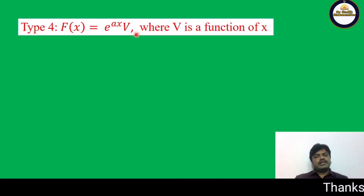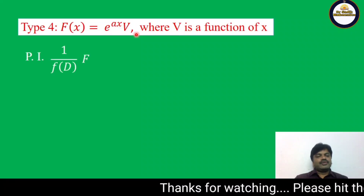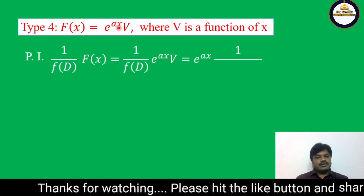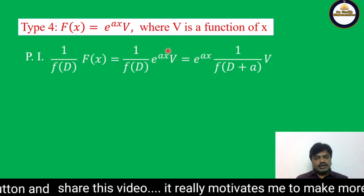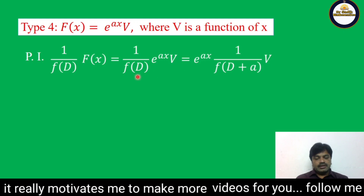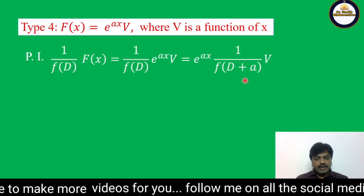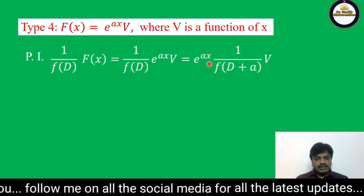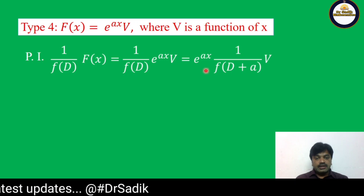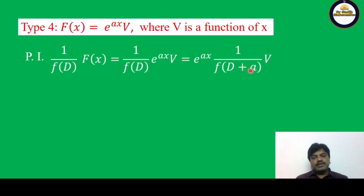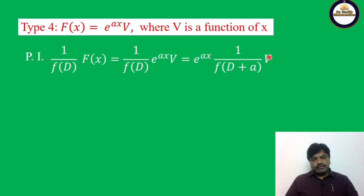Let us see what is the particular integral. Particular integral = (1/f(D)) · f(x), where f(x) = e^(ax) · v. So you write e^(ax) on the left-hand side, then replace D by (D + a): that is e^(ax) · [1/f(D+a)] · v. Now operate this operator on v. If v is a trigonometric function like sin x or cos x, apply Case 2. If it is x^m, apply Case 3.